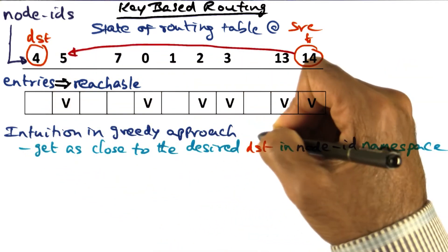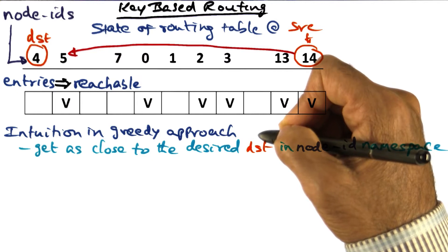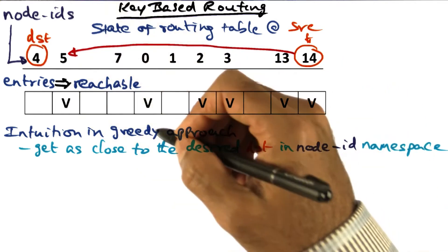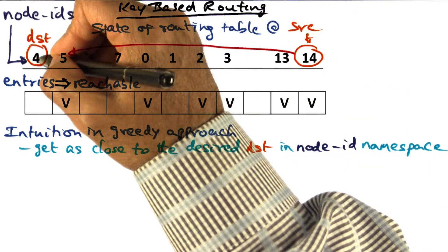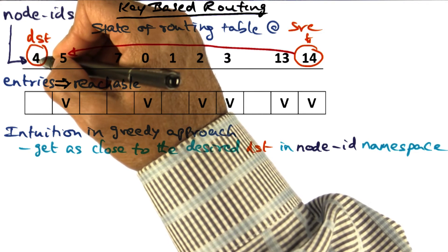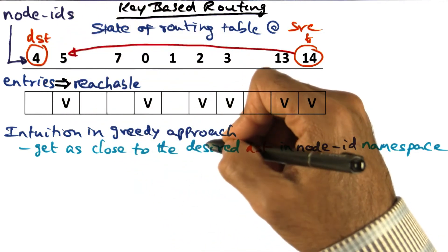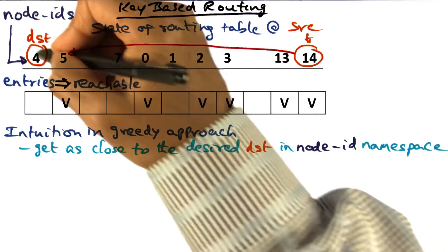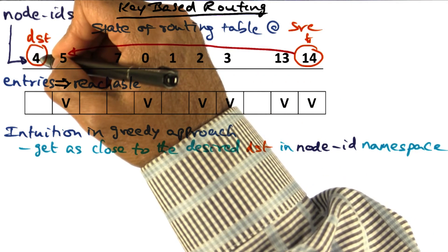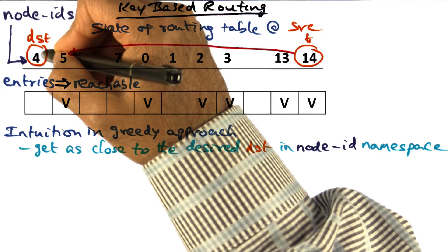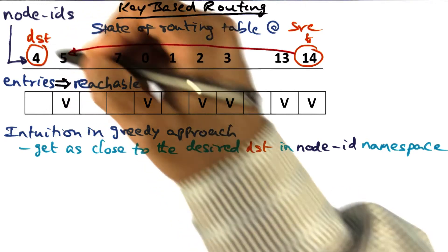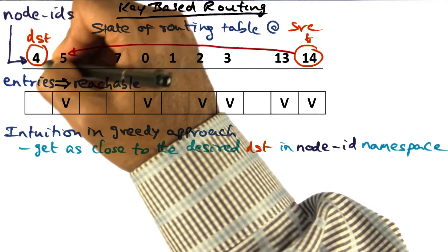The intuition in the greedy approach is: if I'm looking for a particular key k (in this case k=4), then the node that is likely to have that key is the node whose ID is also 4. So this is my desired destination.